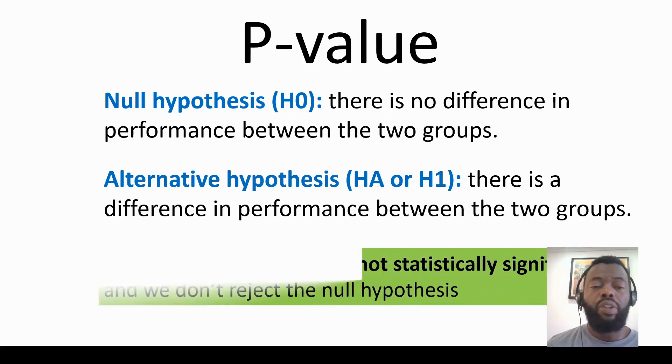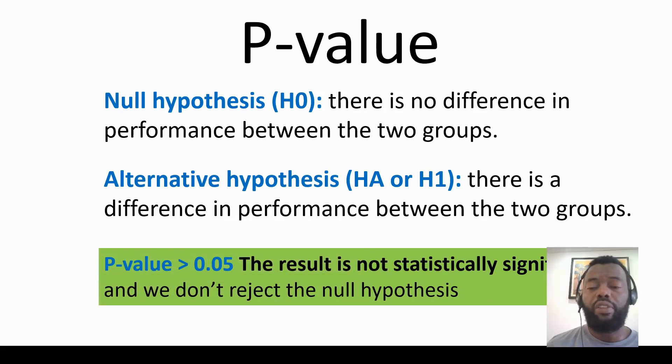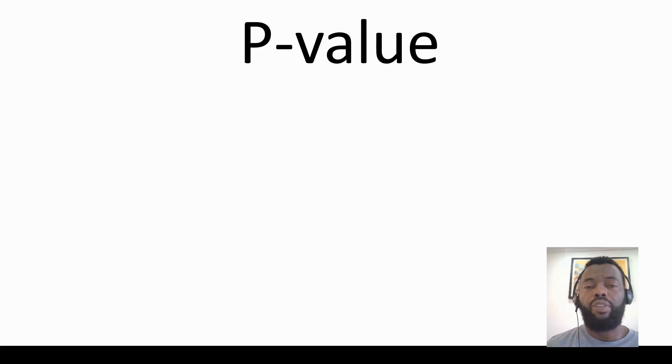If the p-value is greater than 0.05, the result is not statistically significant and we don't reject the null hypothesis. To have a p-value, we have to first set a confidence level. Most of the time, 95% is used.